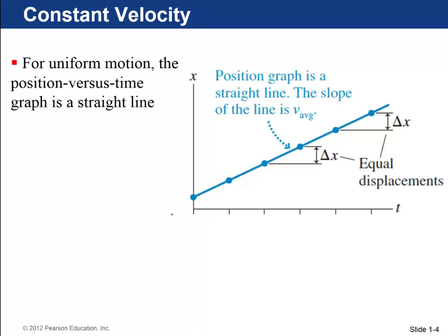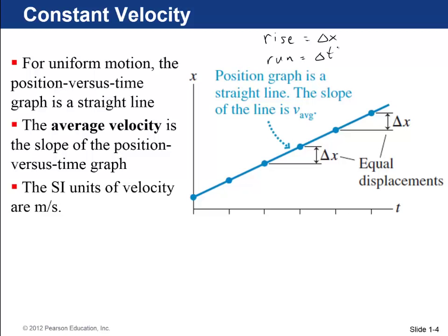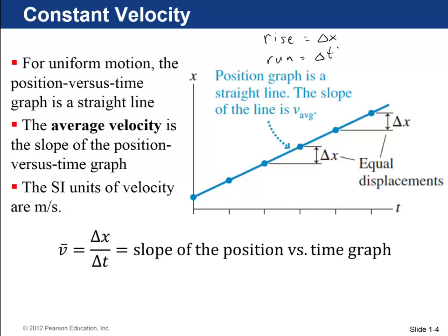Here we're shown a position versus time graph for constant velocity. The average velocity is the slope of this line. The rise on this graph is delta x, the run is delta t, and rise over run gives meters per second. We put a little bar over the v to indicate that it is an average. So the average velocity is the slope of the position versus time graph.